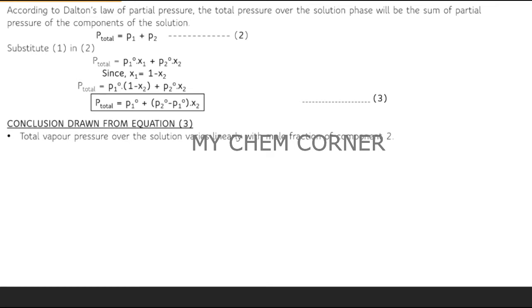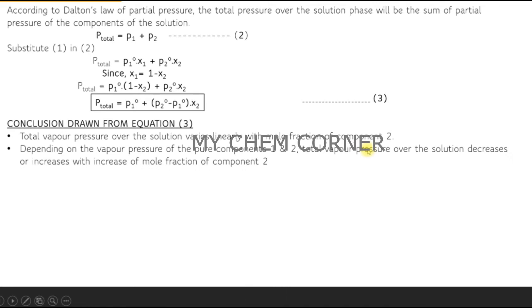From equation three we can conclude that the total vapor pressure of the solution varies linearly with the mole fraction of component 2. Depending on the vapor pressures of pure component one and two, total pressure either decreases or increases with increasing mole fraction — if mole fraction increases, vapor pressure increases, and vice versa.